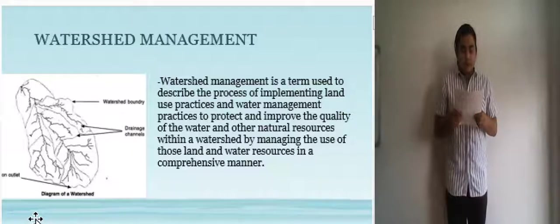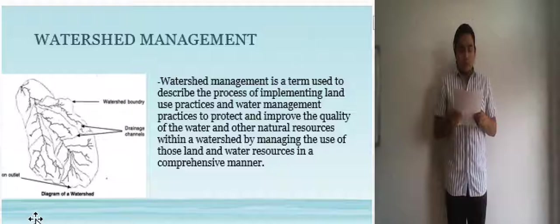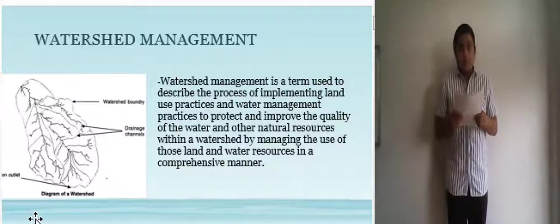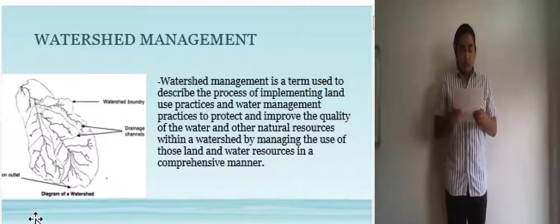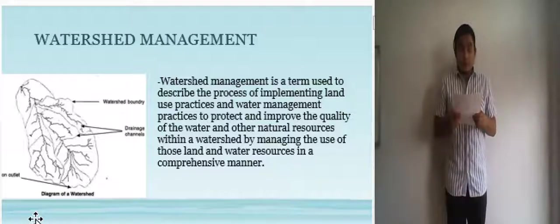Watershed management planning is also a process that results in a plan or a blueprint of how to best protect and improve the water quality and other natural resources in a watershed. Very often, watershed boundaries extend over political boundaries into adjacent municipalities and or states. This is why a comprehensive planning process that involves all affected municipalities located in the watershed is essential to a successful watershed management.